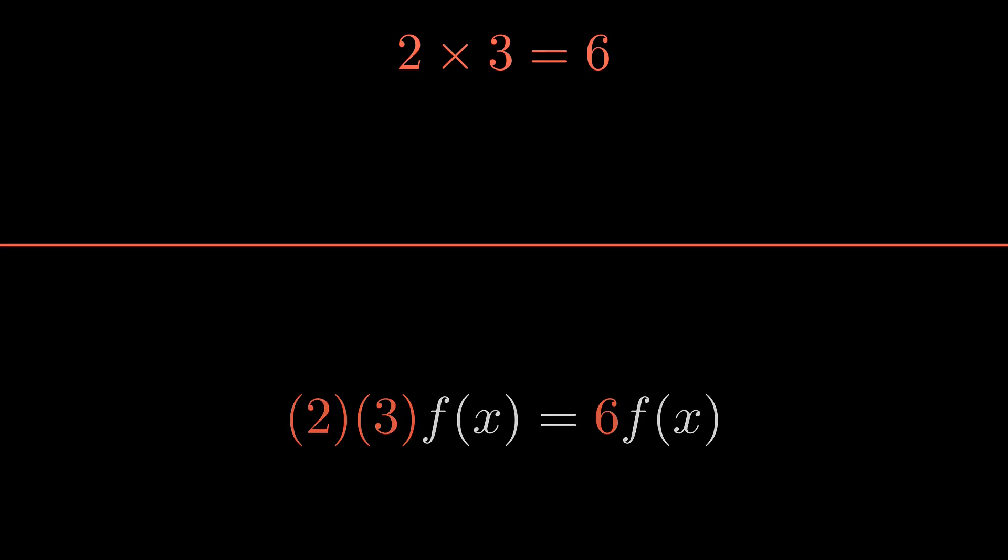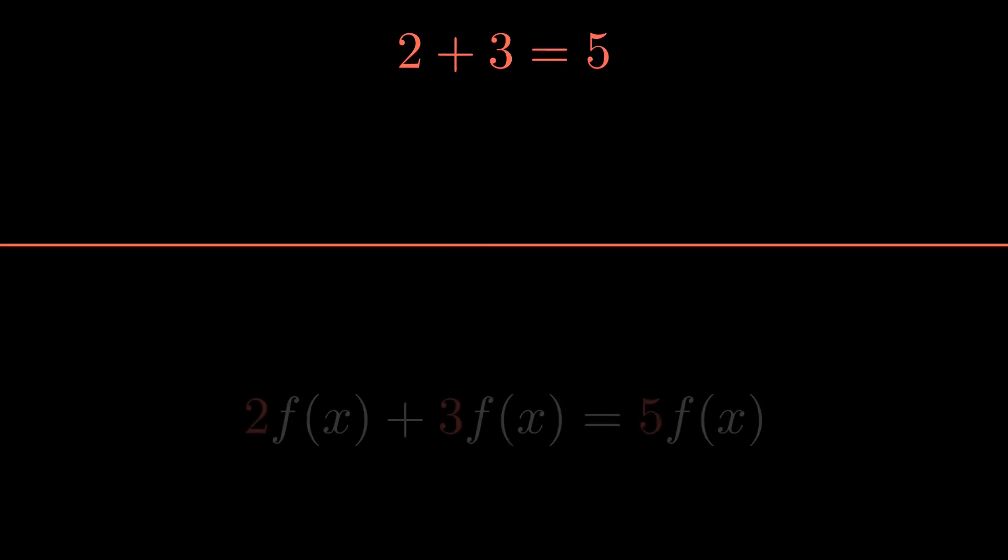Similarly, when written in red, the equation 2 plus 3 equals 5 means that the 2 operator of f plus the 3 operator of f equals the 5 operator of f.